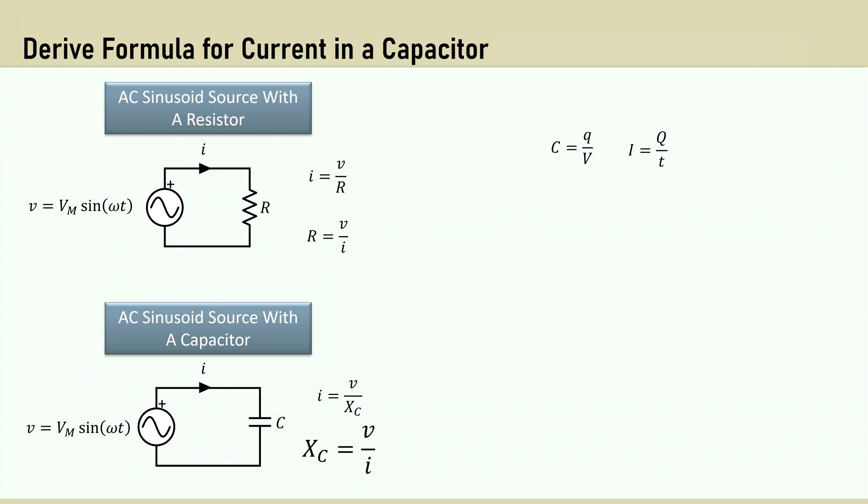Before we can derive the capacitive reactance formula, we need the basic formula for the current in a capacitor. I brought forward the formulas we got from Wikipedia. We want the change of current due to the change in voltage, so I'll make the V lowercase for a changing variable, rearrange to solve for the charge Q. Then we want the derivative or rate of change of Q and the rate of change of voltage.